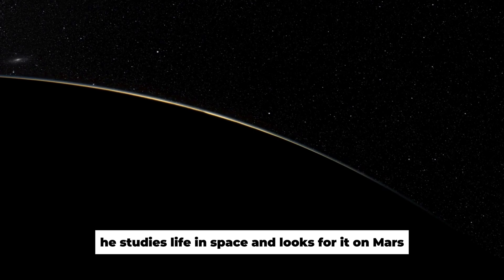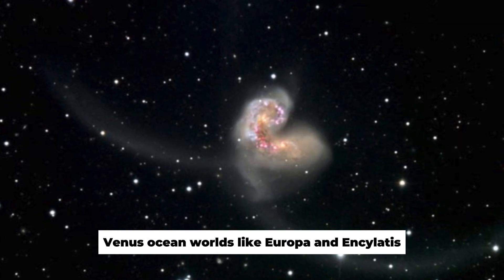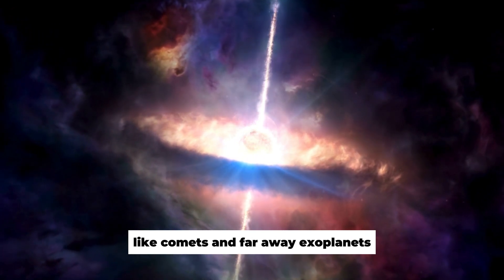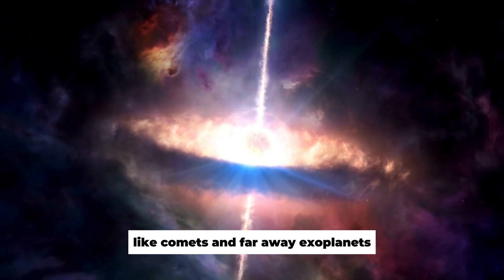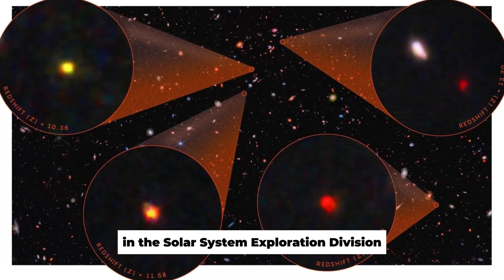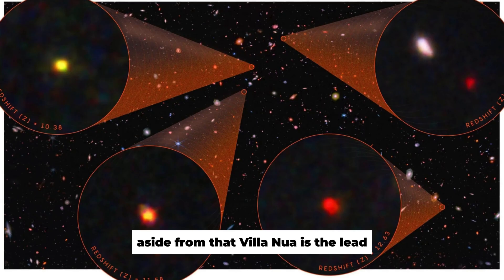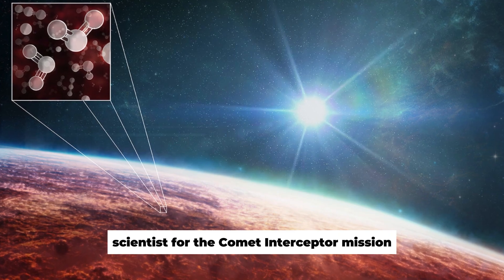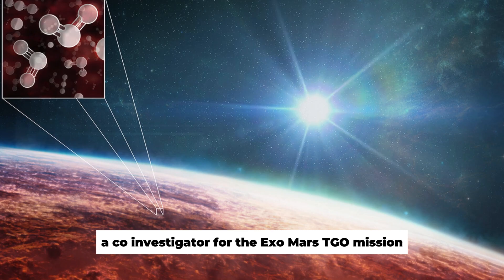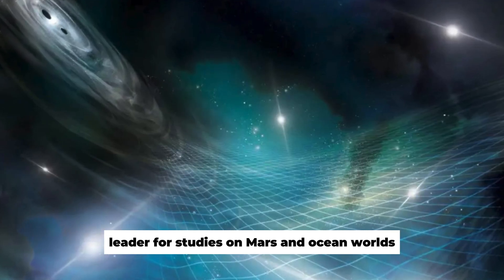He studies life in space and looks for it on Mars, Venus, ocean worlds like Europa and Enceladus, as well as on primitive bodies like comets and faraway exoplanets. He is the Assistant Director for Strategic Science in the Solar System Exploration Division. Aside from that, Villanua is the lead scientist for the Comet Interceptor mission, a co-investigator for the ExoMars TGO mission, and the James Webb Space Telescope leader for studies on Mars and ocean worlds.